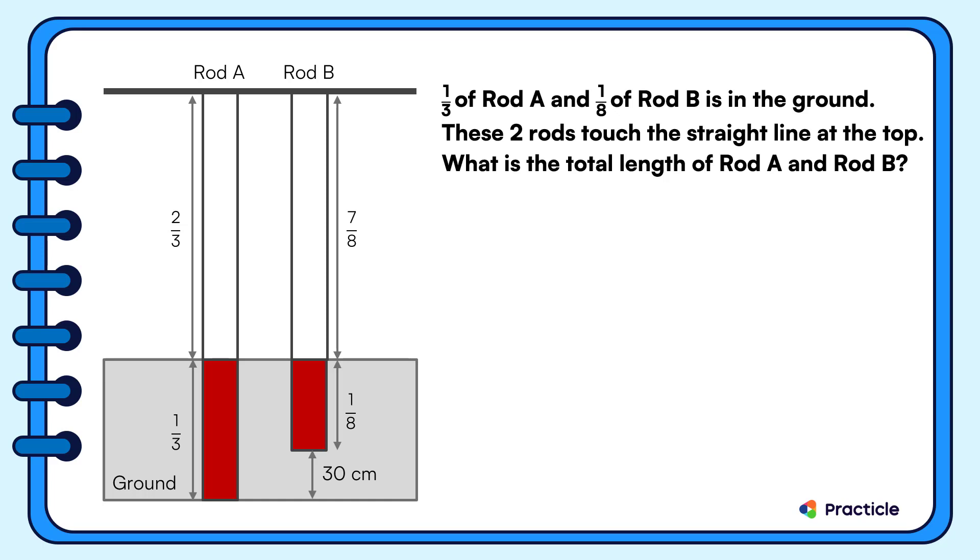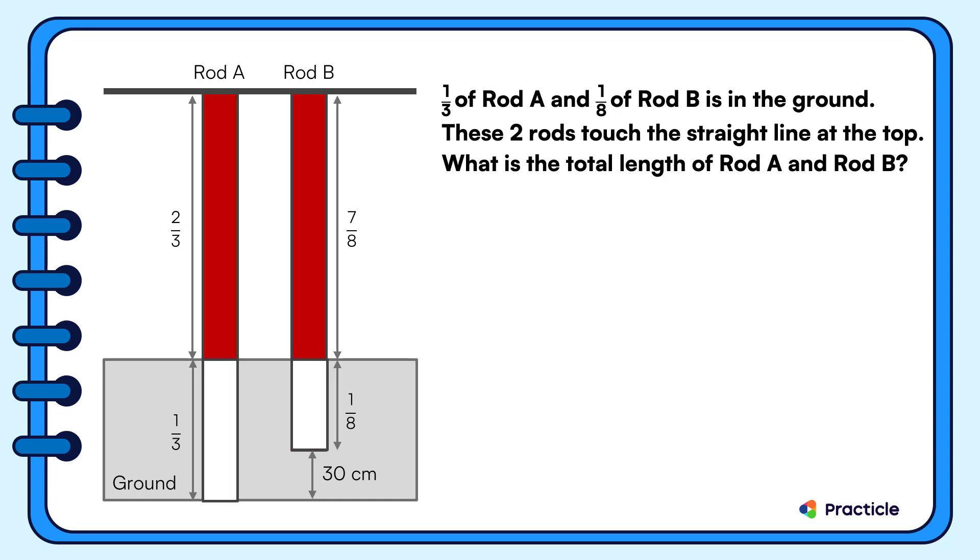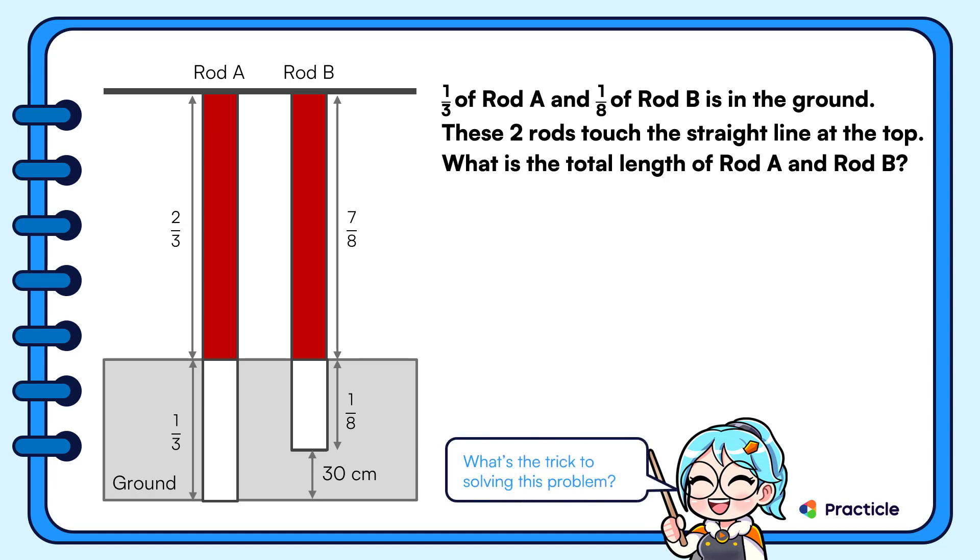And as for the length of the rods that are in the ground, we can see that one third of rod A touches the ground all the way to the end. And one eighth of rod B is 30 centimeters away from the end. Do you know what's the trick to solving this problem?